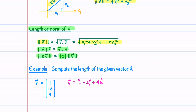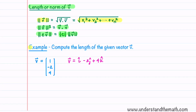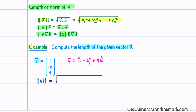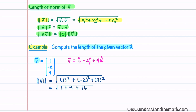Let's now compute the length of a given vector v. The magnitude of v is the square root of each component squared. So we have 1 squared plus negative 2 squared plus 4 squared, which equals the square root of 21.